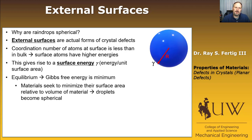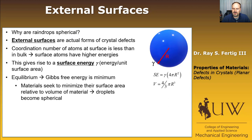The minimum surface area for a given volume of material occurs when you have a sphere. The surface energy of that sphere is gamma times 4πr², which is the surface area, for a volume of 4/3 πr³.